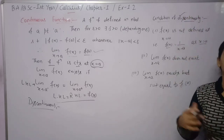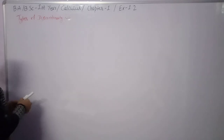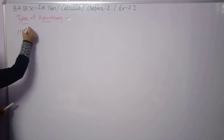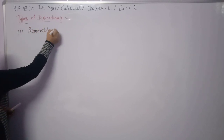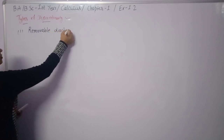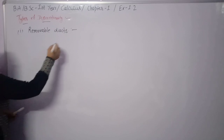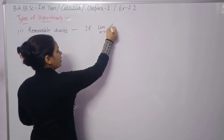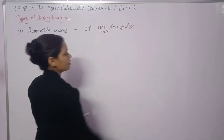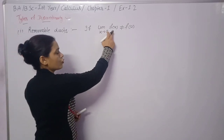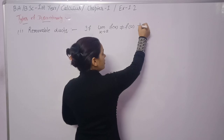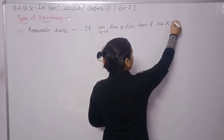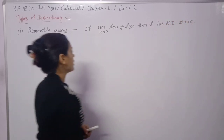Now we look at types of discontinuity. First is removable discontinuity: if limit x→a of f(x) is not equal to f(a), then f has removable discontinuity at x = a.